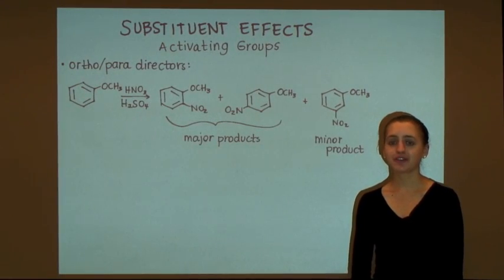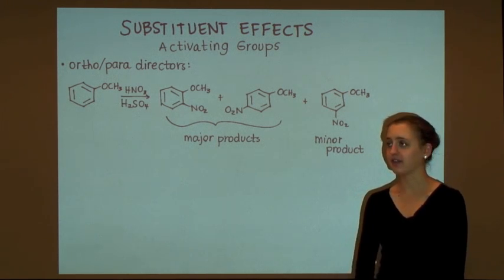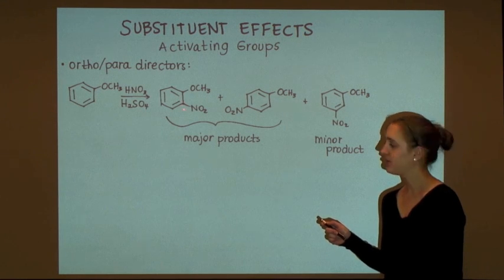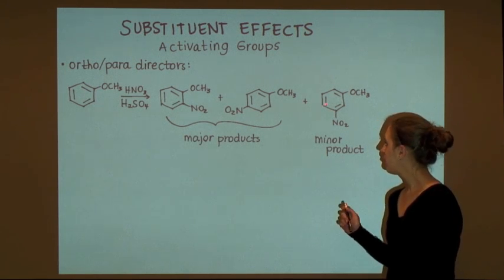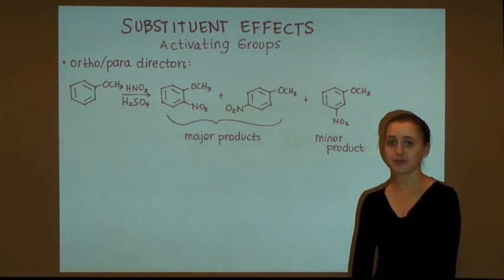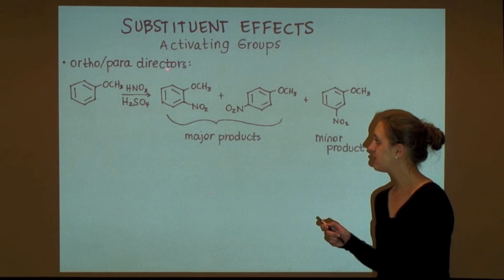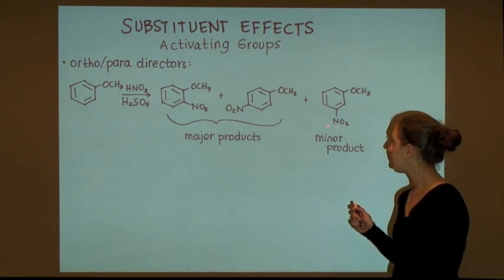In the previous example, we looked at electrophilic aromatic substitution on an aromatic ring that contained an electron-withdrawing group. Now let's look at electrophilic aromatic substitution on an aromatic ring that contains an electron-donating group. In this case, the electron-donating methoxy group will direct the incoming electrophile to the ortho and para positions, such that the ortho and para isomers are the major products while the meta-substituted isomer is the minor product. The ortho and para-substituted arenium ion intermediates that lead to these products are stabilized, while the meta-substituted arenium ion intermediate is destabilized.